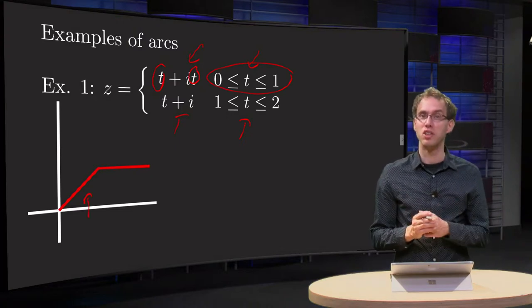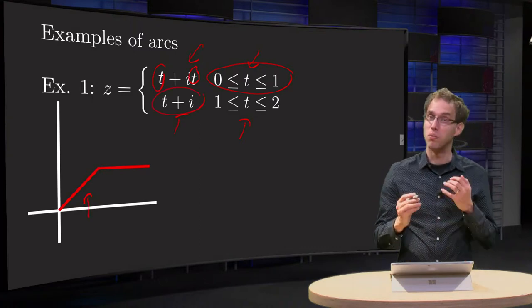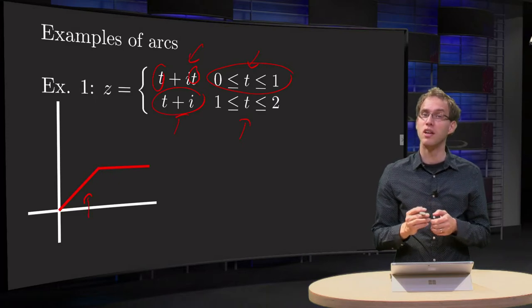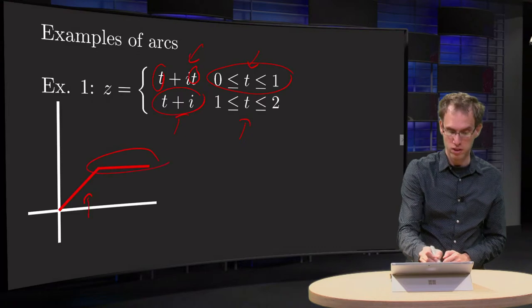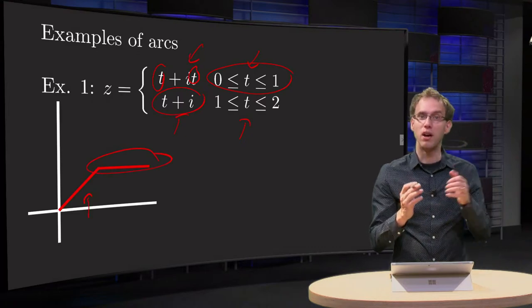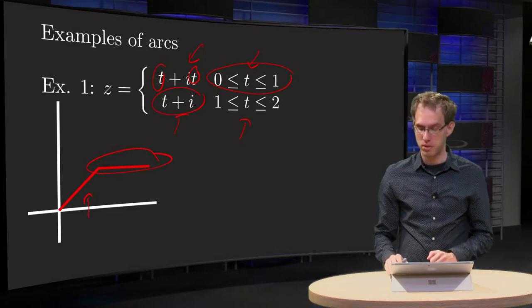And then we continue with the second part. If t equals 1, with t plus i, so that means y equals 1 is constant, and x increases from 1 to 2, so that's this part. So that's how you sketch this type of curves if you have easy parameterizations.